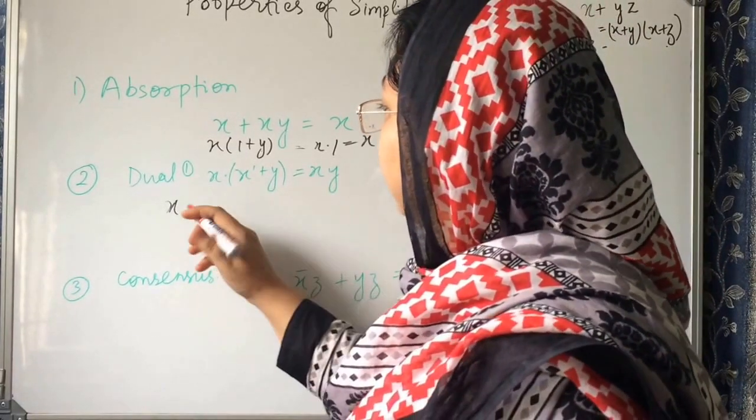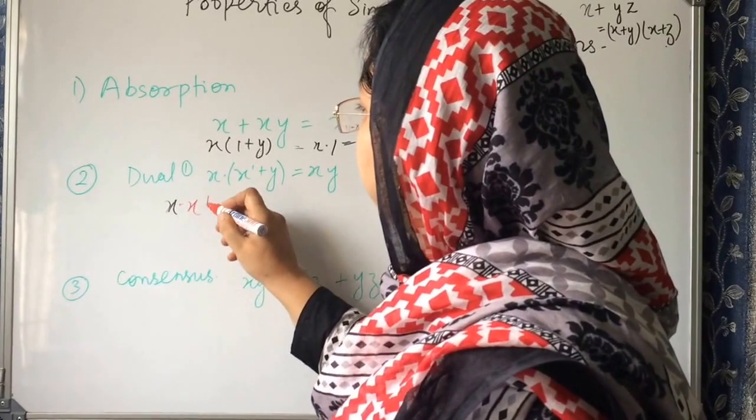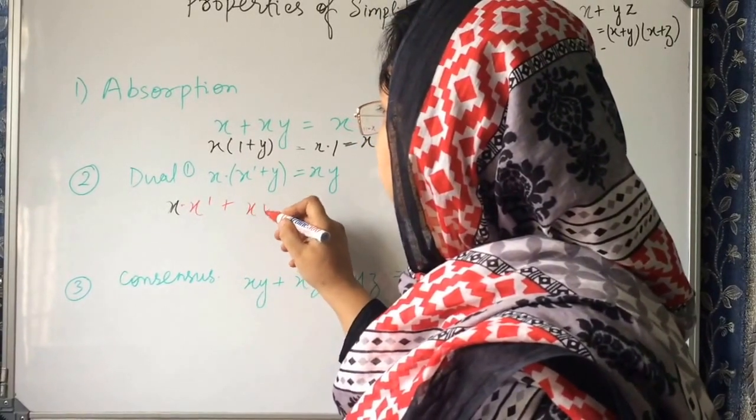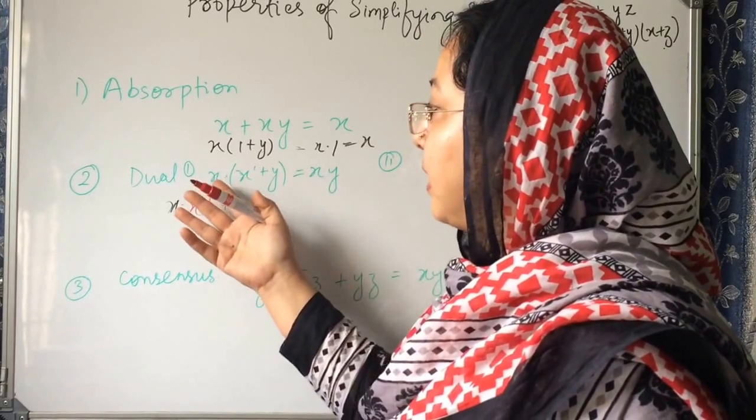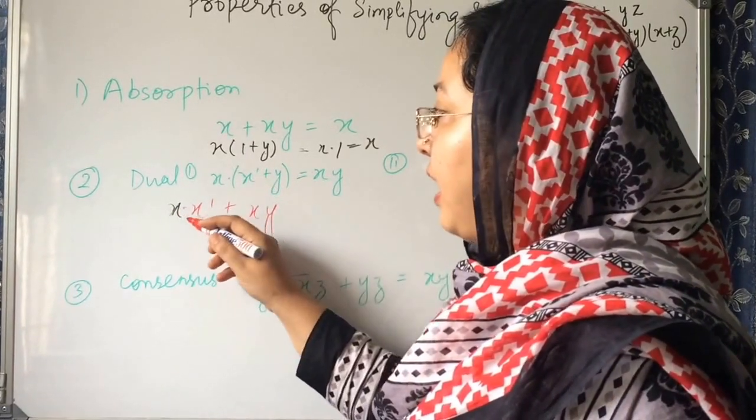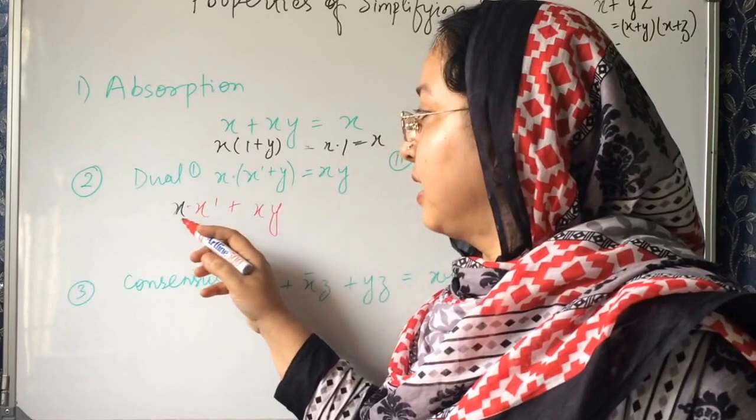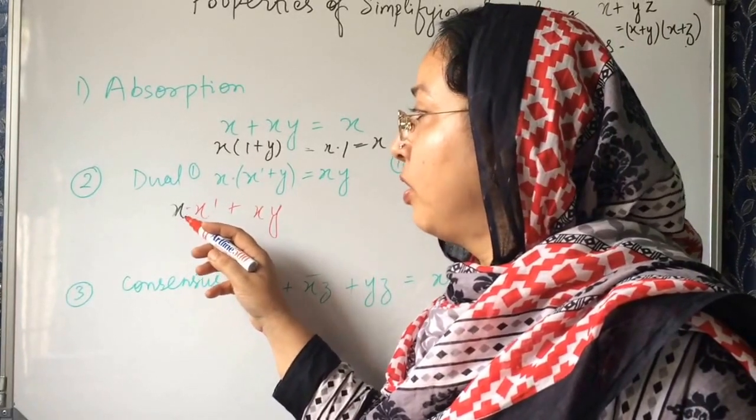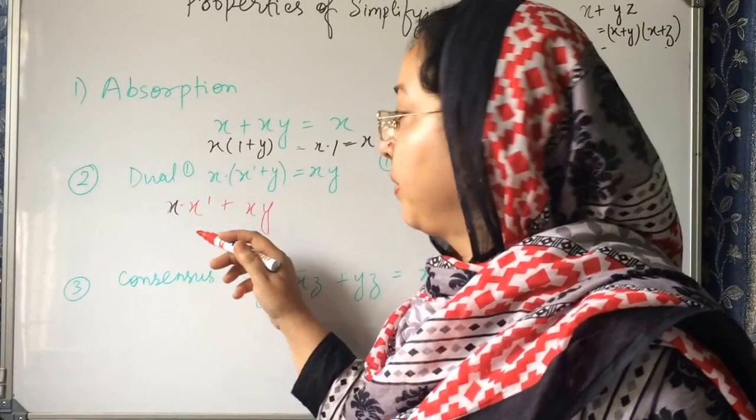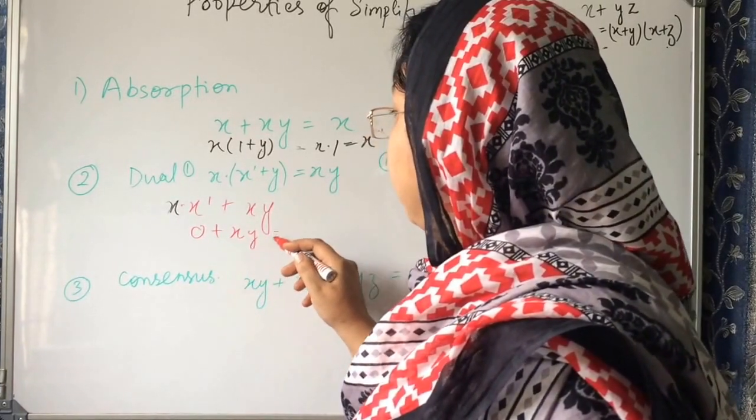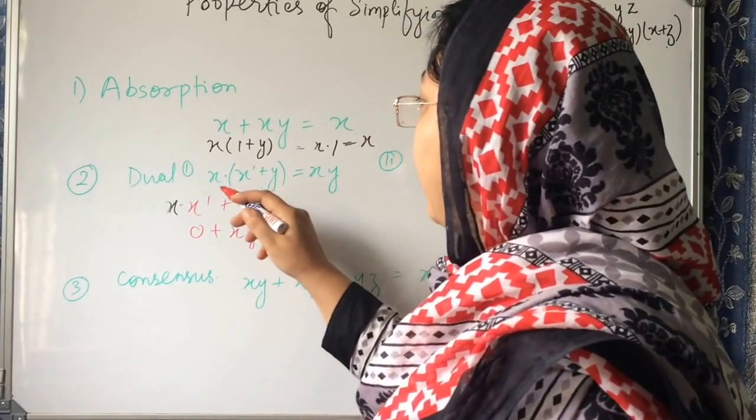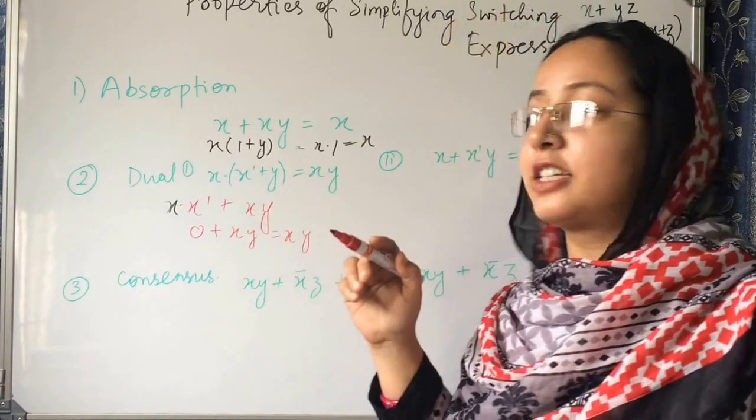X dot x dash plus xy. We are expanding, we are opening this bracket. x dot x dash plus xy. And x dot x dash, since one of them is 0, this term will become 0. So this is 0 plus xy will become xy. So x dot x dash plus y will be xy.